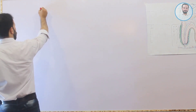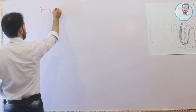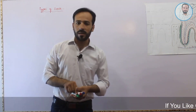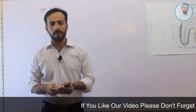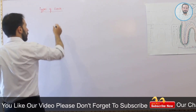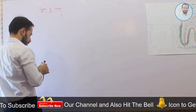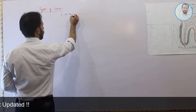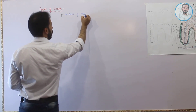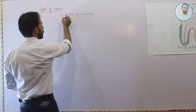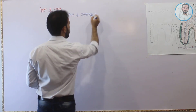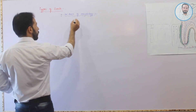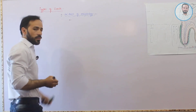We are classifying teeth on three bases. The first classification will be on the basis of morphology — that means on the basis of the shape of the teeth. On the basis of shape we have two types of teeth.